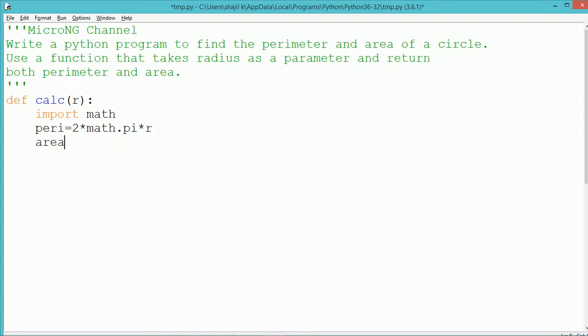Perimeter of the circle is calculated using the equation 2*pi*r, and the area of the circle is calculated using the equation pi*r^2.